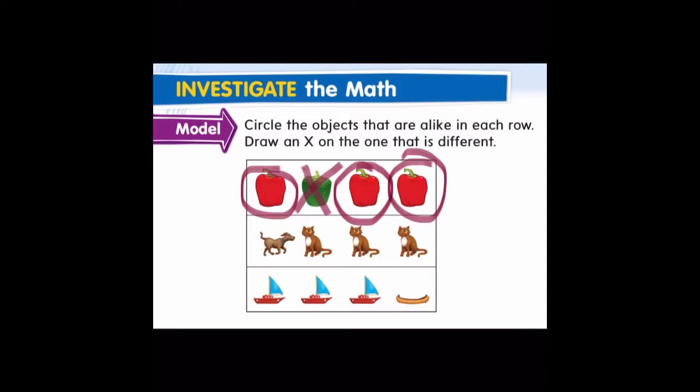Now let's take a look at the second row. Can you see which object in this row is different? Good job — it's the dog, so we're going to put an X on the dog. And which objects are alike? The cats are alike, so we are going to circle the cats.